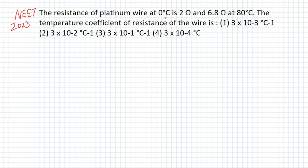The resistance of platinum wire at 0 degrees Celsius is 2 ohms, so R0 equals 2 ohms. At 80 degrees Celsius, it is 6.8 ohms, so RT equals 6.8 ohms.